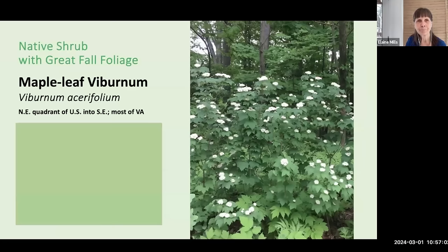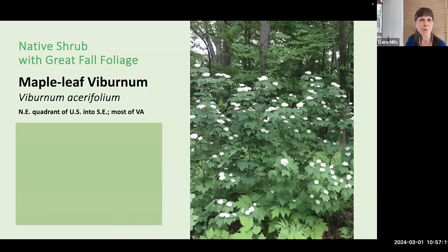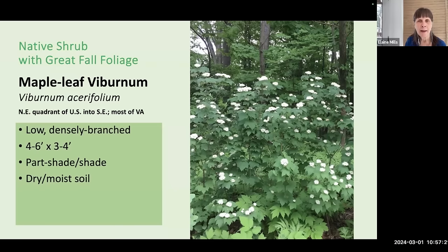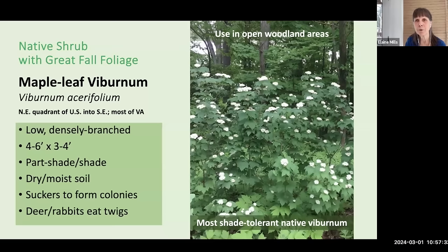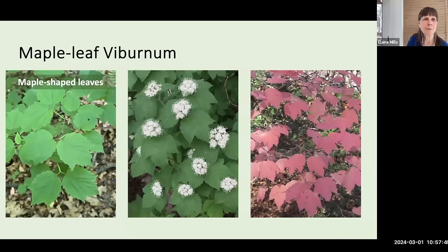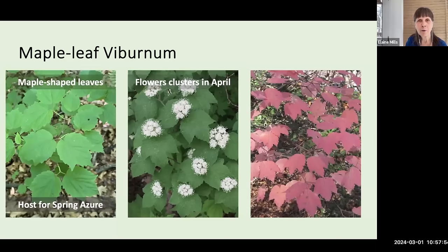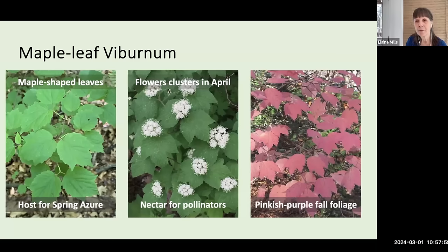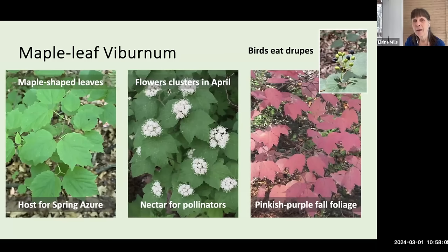Another native shrub with great fall foliage is yet another native viburnum — Maple leaf viburnum, Viburnum acerifolium. This is a low, densely branched species growing about four to six feet tall, preferring part to full shade and dry to moist soil, and can sucker to form colonies. It's the most shade tolerant of our native viburnums and is well suited for use in open woodland areas. Maple leaf viburnum can be identified — and distinguished from non-native species — by its maple-shaped leaves, which provide nourishment for the spring azure butterfly. It has lovely flower clusters in April providing nectar for pollinators, unique pinkish purple fall foliage, and provides fruit for birds.